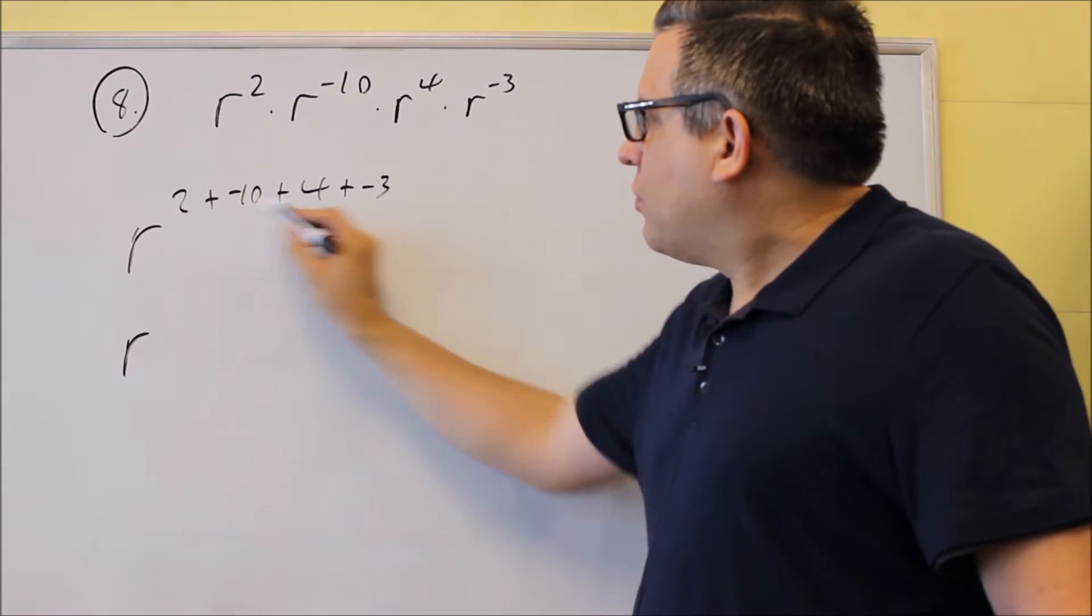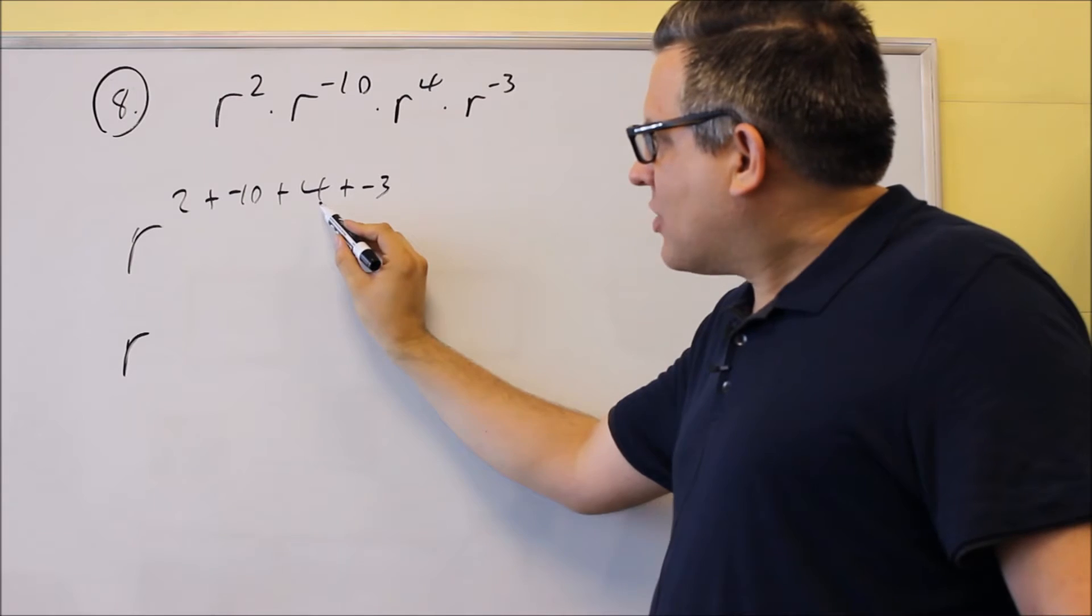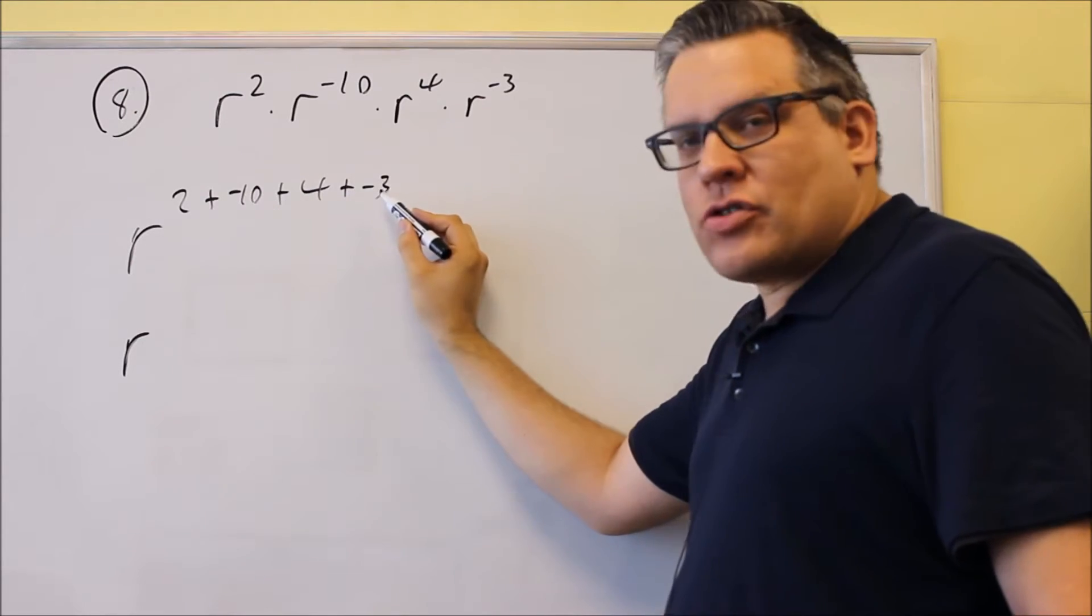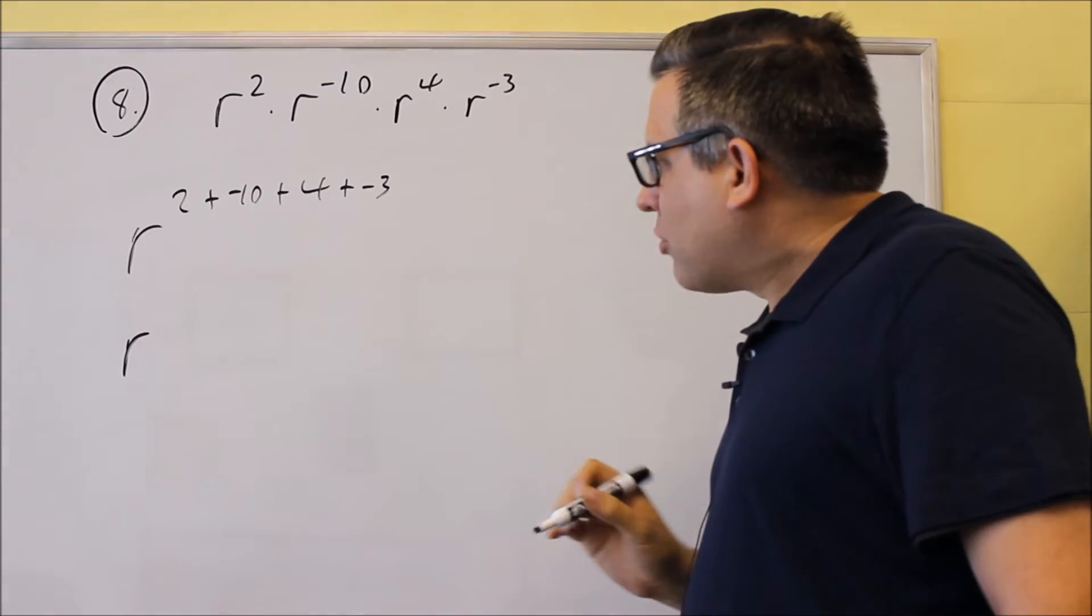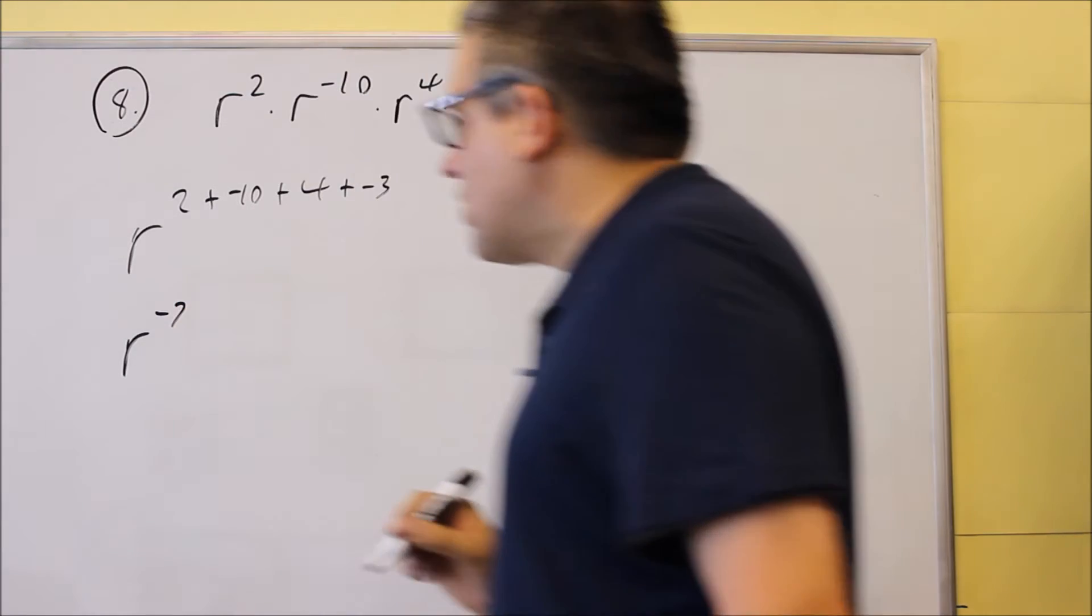All right, so I'm going to do 2 plus 4 is 6, and then I have a negative 13. So negative 13 plus 6, that's going to give you a negative 7.